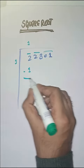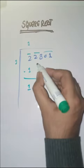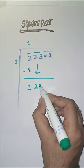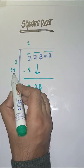1 times 1 is 1. Minus karenge, result is 1. Next pair we bring down 28. Here we do 1 plus 1 which is equal to 2.